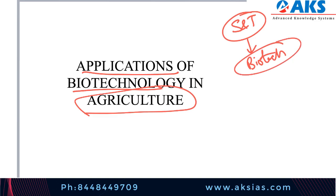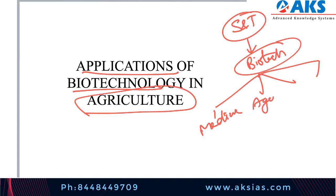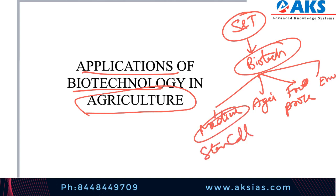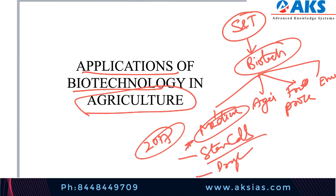In biotechnology there are four major core areas: first is medicine, second is agriculture, third is food processing, and fourth is environment. In medicine we have already discussed stem cells and draft guidelines on stem cells — there was a question in Mains since 2017, so the importance of this topic is immense. I have made a separate video covering gene editing, CRISPR technology, and three-parent baby concepts.